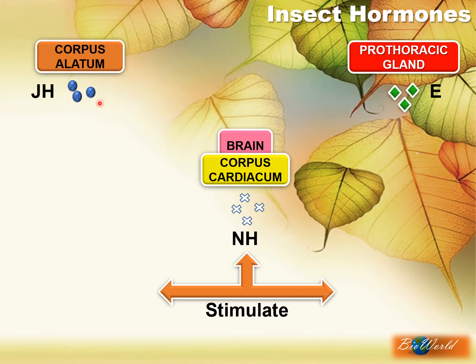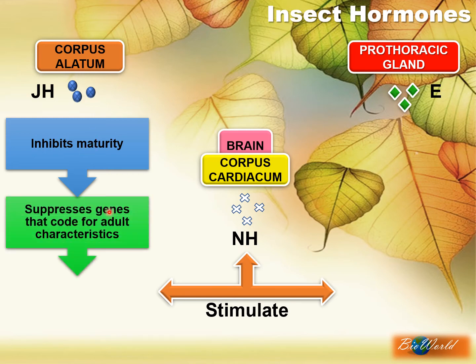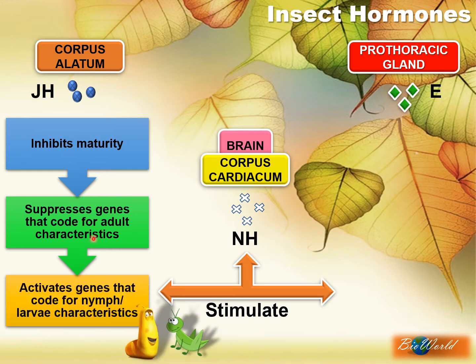Let's see what is the function of the juvenile hormone. From the word juvenile, you can understand that this hormone will prevent the insect from growing up — so it inhibits maturity. It does this by suppressing or blocking the genes that code for adult characteristics. So the butterfly or the grasshopper will not be able to become an adult in the presence of JH. Instead, JH will activate genes that will code for the insect to remain as a nymph, if we are talking about incomplete metamorphosis, or to remain as a larva if we are talking about complete metamorphosis.